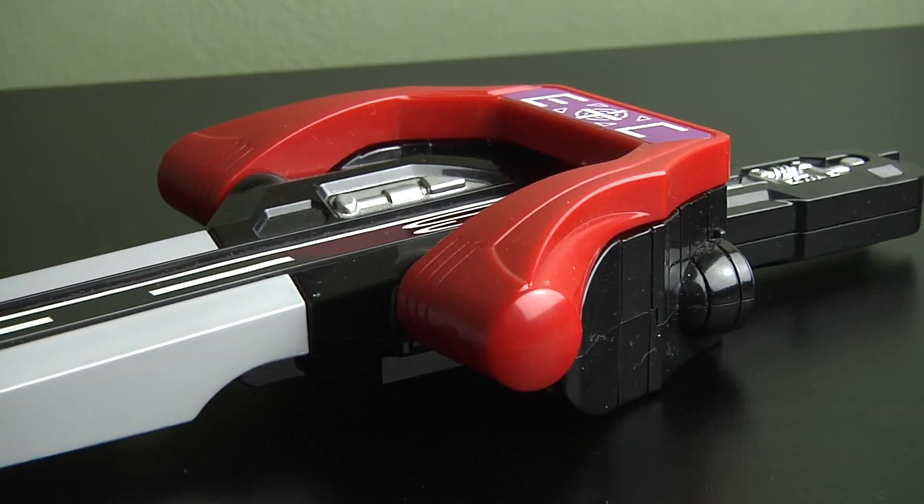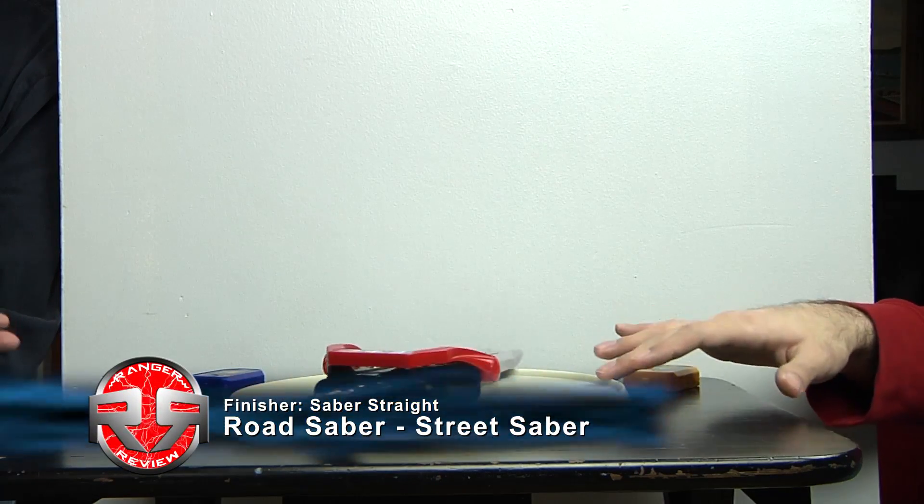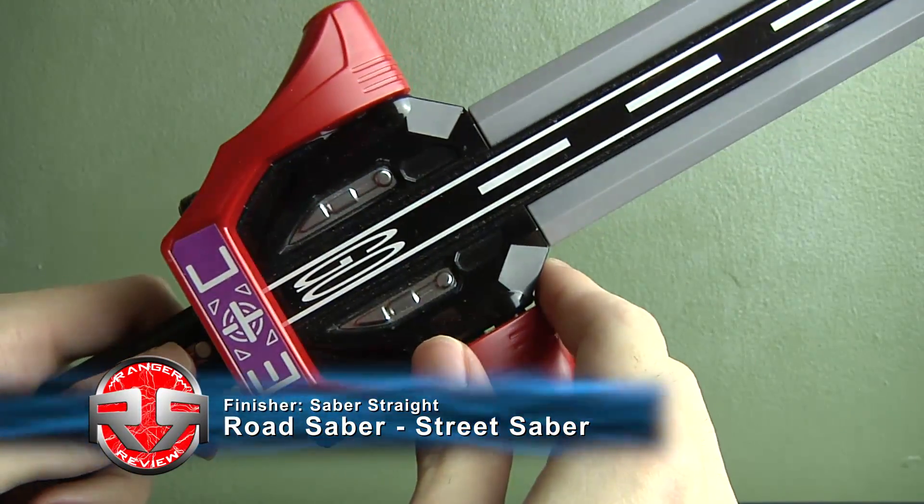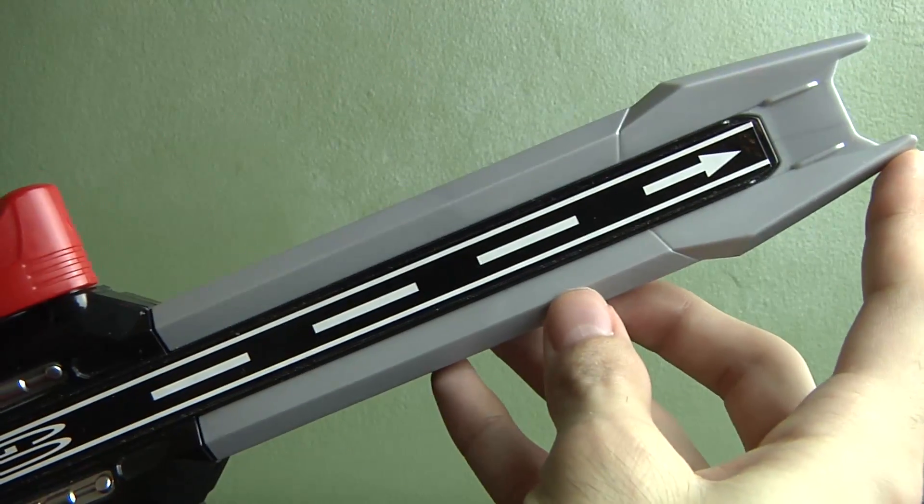So now we have the Street Saber. This is of course Red's main weapon, it's mainly just a bunch of swords. But it actually looks like a little racetrack because it says go on it and you can actually have a little race figure here.